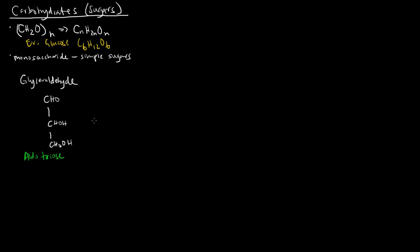Another three-carbon sugar is dihydroxyacetone. This is also a triose because it has three carbons, but it's a ketotriose. The reason it's a ketose is because this carbon here is a ketone — these hydroxy groups are out here. This is not an aldehyde; it's a ketone because there are carbons on either side of the carbon that's double-bonded to the oxygen.